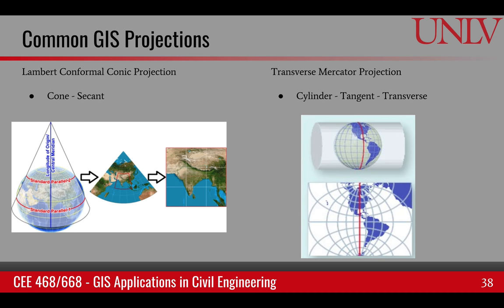Two projections you'll come across most frequently are the Lambert conformal conic projection and the transverse Mercator. The Lambert conformal conic was created by Lambert, is conformal — meaning it preserves shapes — and uses a cone. It can be tangential or secant, and typically has two standard parallels.